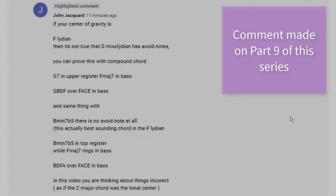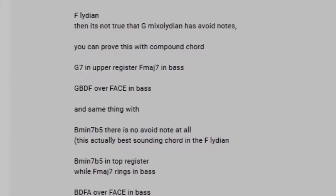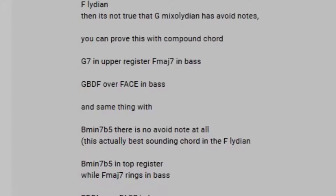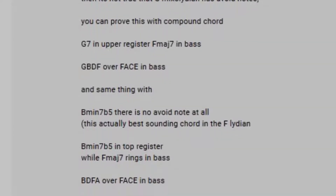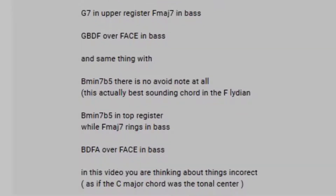John Jacquard writes: if your centre of gravity is F Lydian, then it's not true that G Mixolydian has avoid notes. You can prove this with compound chord G7 in upper register, Fmaj7 in bass — GBDF over FACE in bass. And the same thing with B minor 7 flat 5. There is no avoid note at all. This is actually the best sounding chord in F Lydian: B minor 7 flat 5 in top register while Fmaj7 rings in bass — BDFA over FACE in bass. In this video you are thinking about things incorrectly, as if the C major chord was a tonal centre.